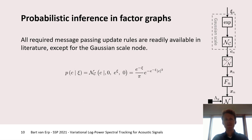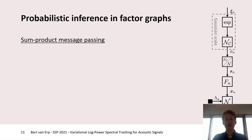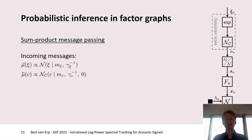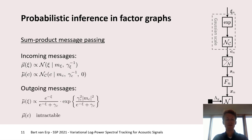In the current model, all required message passing update rules are readily available in the literature, except for the Gaussian scale node, which transforms our complex frequency coefficients to our log power spectrum. For simplicity, we will drop all indices and subscripts. If we calculate the messages corresponding to the sum-product algorithm within the Gaussian scale node, and assume incoming messages of the given form, then we see that the outgoing message towards the log power spectrum psi has a functional form which cannot be directly related to a common distribution, and even the computation of the message towards c becomes intractable.